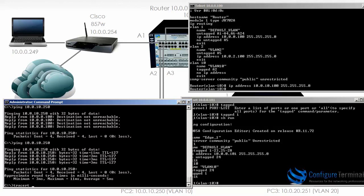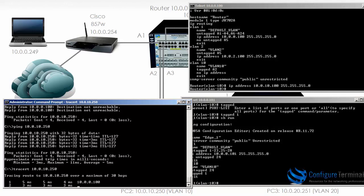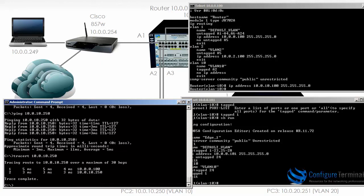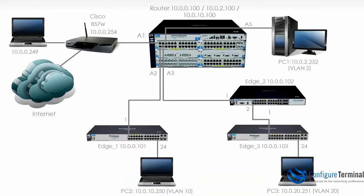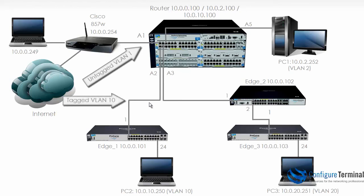Running tracert to that address, you can see that traffic firstly goes to 10.0.0.100, which is the 5406 acting as our router, and then goes to device 10.0.10.250. So we have successfully configured inter-VLAN routing between VLAN 1 and VLAN 10. It's important to realize that frames are untagged from our PC to the router, then sent as tagged frames across the link between our two switches, and then go as untagged frames to the destination PC.